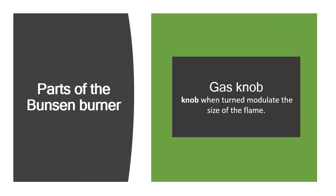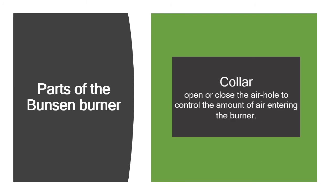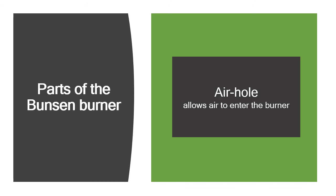The functions of the parts of the Bunsen burner: The gas knob, when turned, modulates the size of the flame, whether small or large. The collar is used to open or close the air hole to control the amount of air entering the burner. The air hole allows air to enter the burner. The barrel allows air and gas to mix.